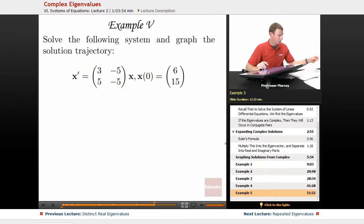In our next example here, we're going to solve the following system and graph the solution trajectory. This is x prime equals the matrix [3, -5; 5, -5]. You'll notice that's the exact same one as before, so we're going to start with our general solution from before.